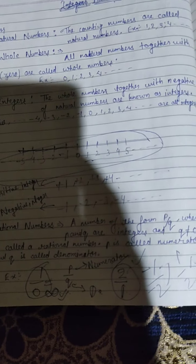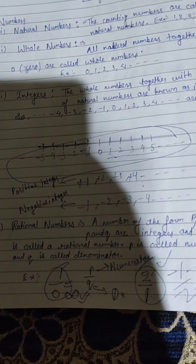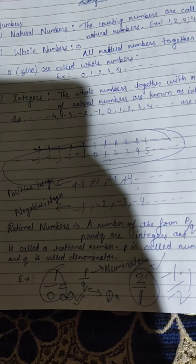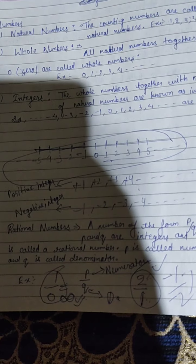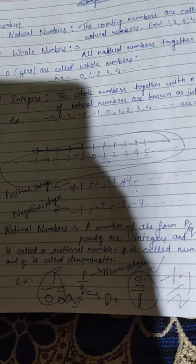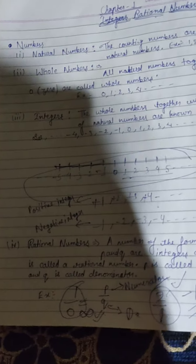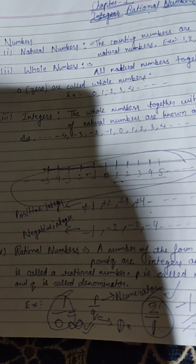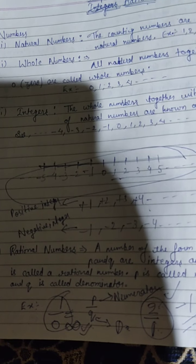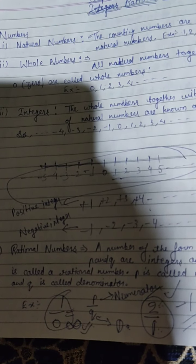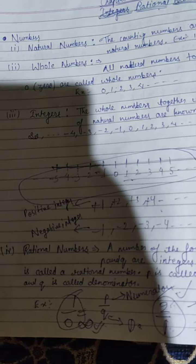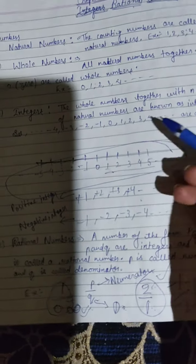Together इसको specifically Integers बोलेंगे। For example, जैसा आपको number line में दिख रहा है — यह last year भी आपने पढ़ा है Chapter 1 में — 0 is the middle term. From the right there are positive numbers, specifically called positive integers, and from the left of 0 are the negative integers। 0 के right में plus 1, plus 2, plus 3 हैं — number line में plus दिखना जरूरी नहीं है। Minus 1, minus 2, minus 3, minus 4 left hand side में होंगे, और plus 1, plus 2, plus 3, plus 4, plus 5 right hand side में होंगे।